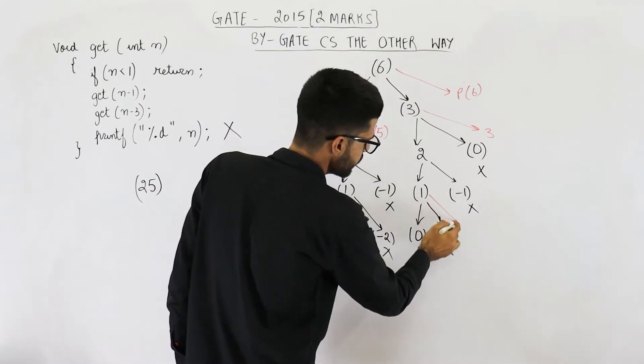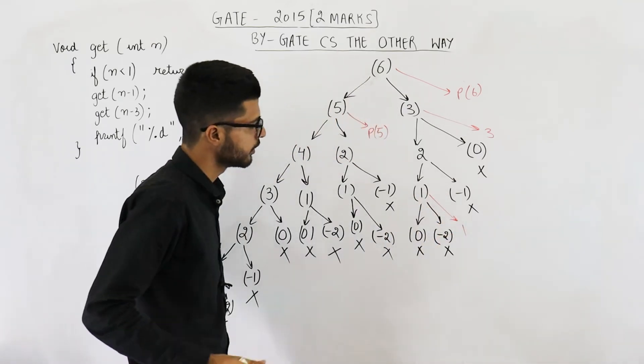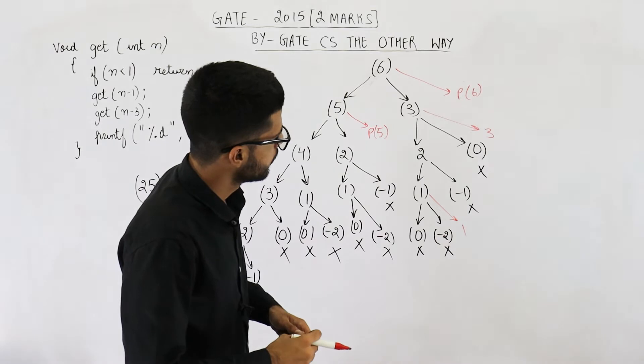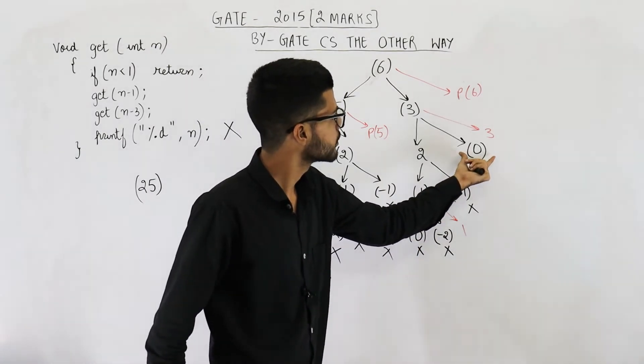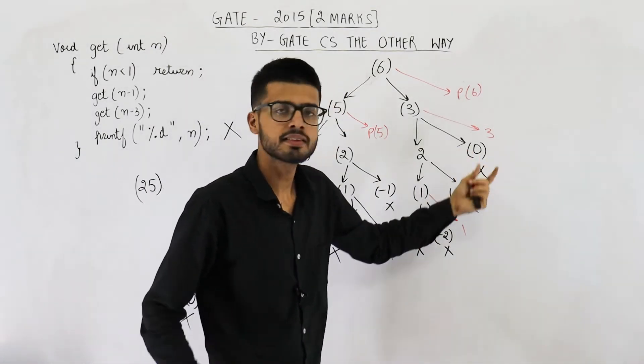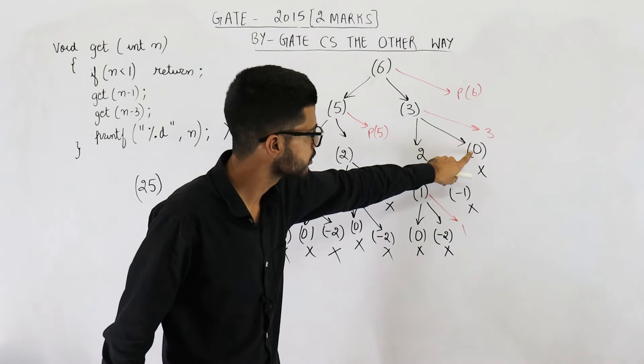Here, 1 will be printed. Now see what will happen in this case. In this case, nothing will be printed — for get(0), this function will end on the first line only.